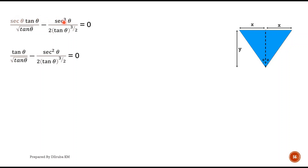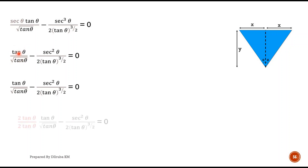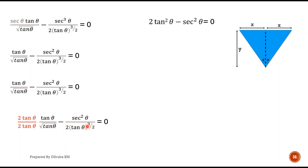After cancelling sec θ, we get: tan θ / √tan θ − sec²θ / (2·tan θ^(3/2)) = 0. Making the denominator common by multiplying through by 2·tan θ, the equation becomes: 2·tan²θ − sec²θ = 0, or 2·tan²θ = sec²θ. Taking the square root of both sides gives √2 · tan θ = sec θ.